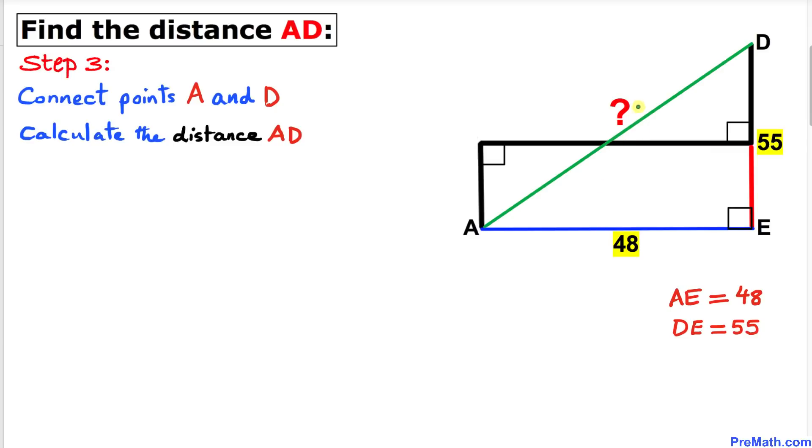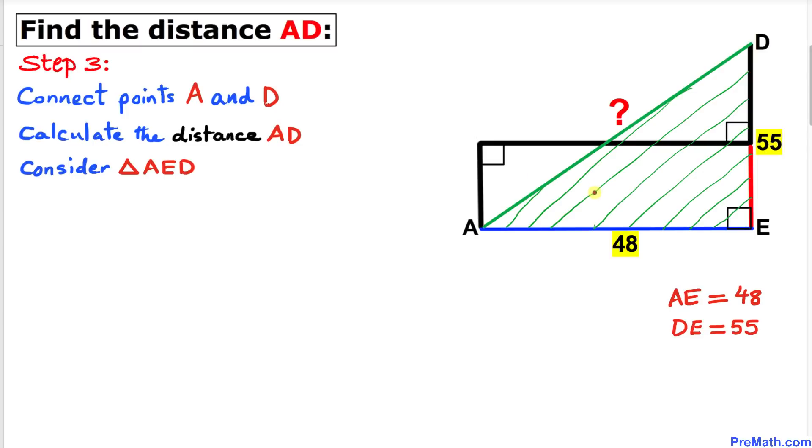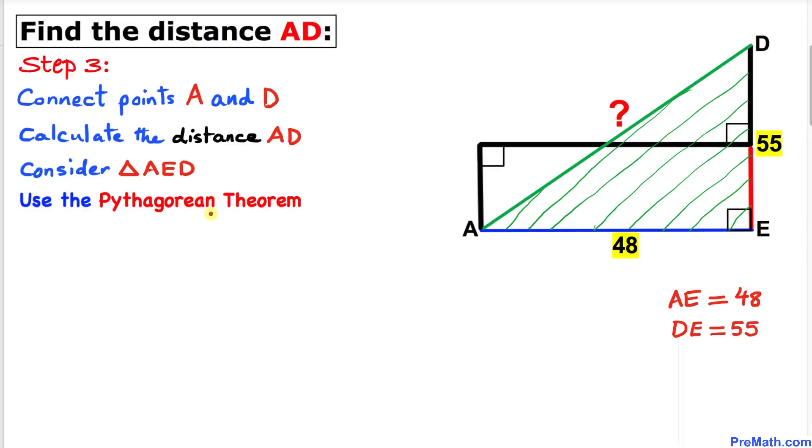Let's focus on this triangle AED. We know that this is a right triangle, so therefore we are going to use the Pythagorean theorem. Here's our Pythagorean theorem: a squared plus b squared equals c squared.